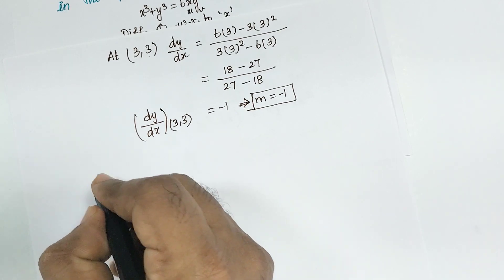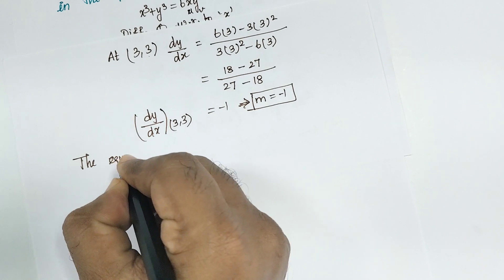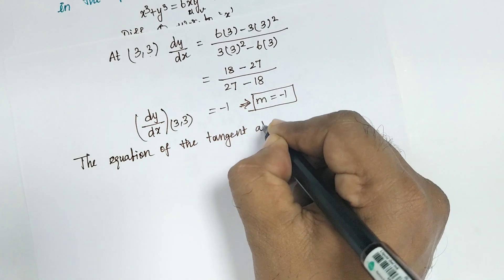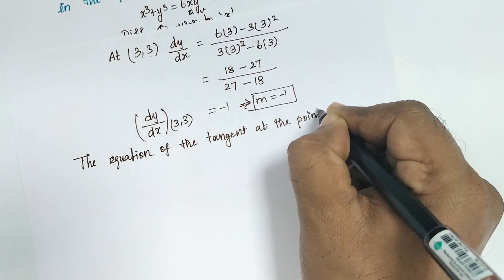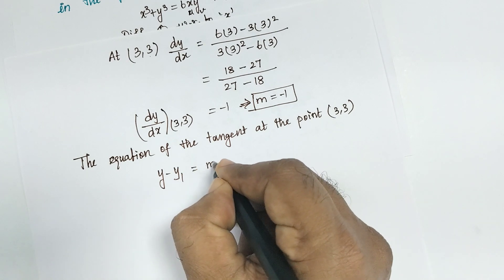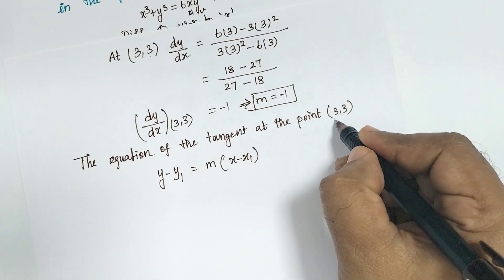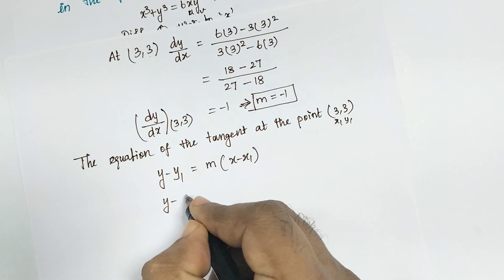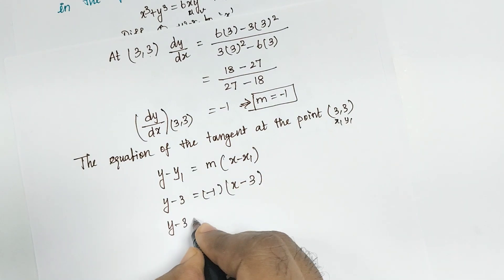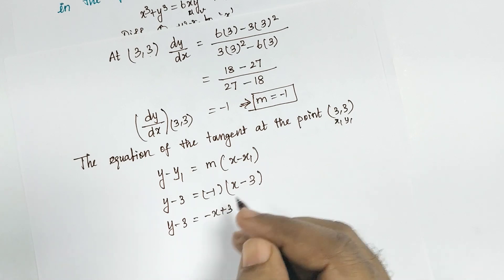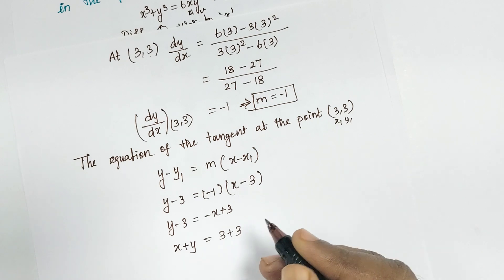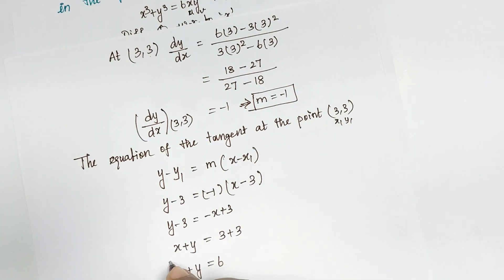The equation of the tangent at point 3 comma 3: using formula y minus y1 equal to m of x minus x1, substituting y1 equal to 3, m equal to minus 1, x1 equal to 3: y minus 3 equal to minus 1 times x minus 3. Multiplying: y minus 3 equal to minus x plus 3. Shifting minus x to left and minus 3 to right gives x plus y equal to 6.